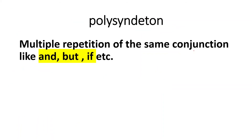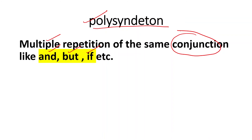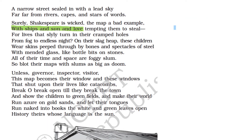Yet another device is polysyndeton — the multiple repetition of the same conjunction. If 'and,' 'but,' or 'if' or any such conjunction is repeated in a line, it is known as polysyndeton. Look at: 'with the ships and sun and' — the repetition of the conjunction 'and.' So it is called polysyndeton.